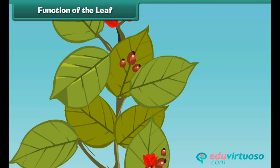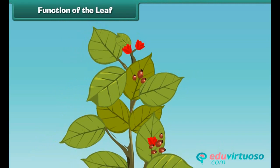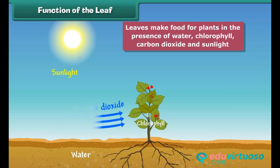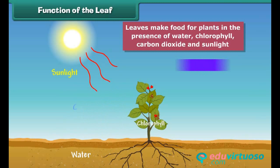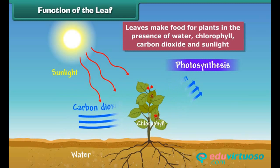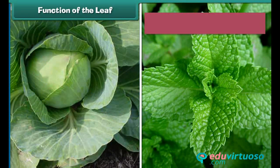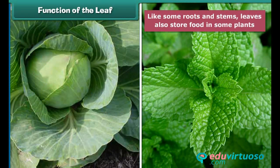The main function of a leaf is to make food for the plant. For making food, leaves use water, chlorophyll, carbon dioxide and sunlight. This process is called photosynthesis, and in this process, oxygen is released. All living things require oxygen for breathing. Some plants like cabbage and mint store food in their leaves, and we eat these leaves to get nutrition.